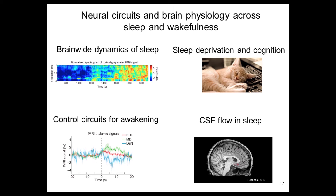We're also interested in understanding what are the deep brain control circuits that seem to switch you between sleep and wakefulness. For example, the thalamus has many tiny nuclei that seem to play important roles in controlling what kind of sleep state you're in. So we do imaging studies to try and figure out what those circuits may be.